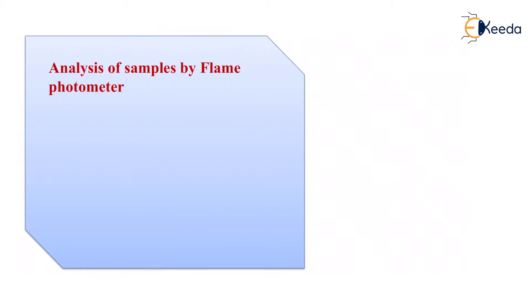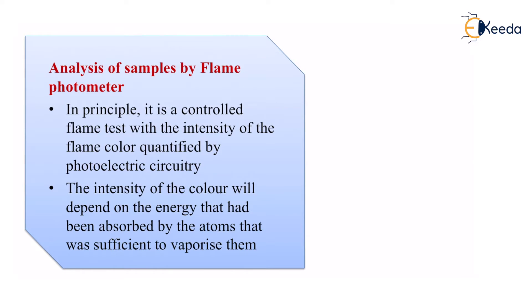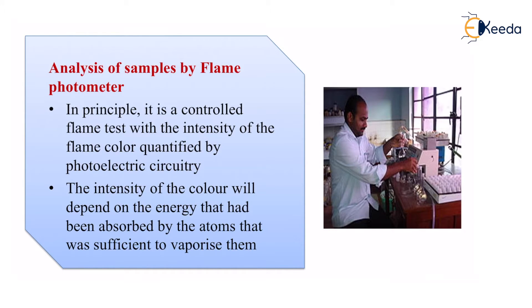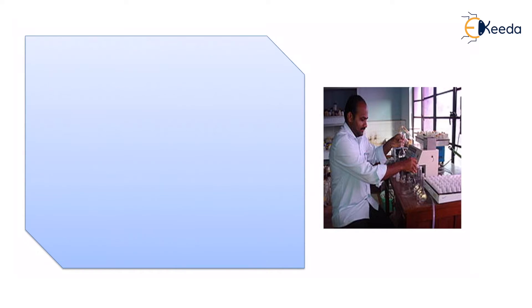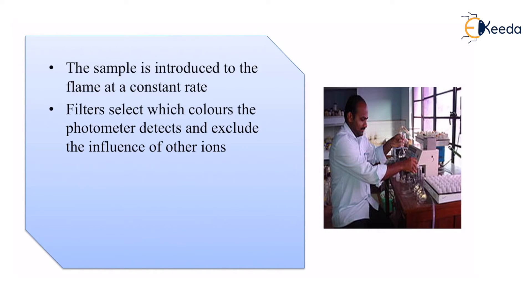Let us see an analysis sample by flame photometer. In principle, it is a controlled flame test with the intensity of the flame color quantified by the photoelectric circuitry. The intensity of the color will depend on the energy that had been absorbed by the atoms that was sufficient to vaporize them. There is an image of a person doing the flame photometry with the help of a flame photometer — this is exactly how it is done. The sample is introduced to the flame at a constant rate. Filters select which colors the photometer detects and exclude the influence of other ions.